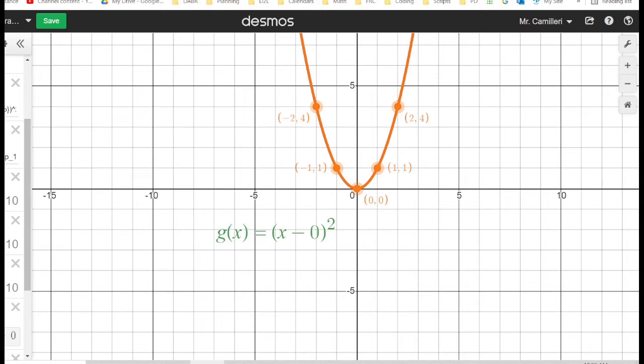Now let's take a look at what happens when we subtract a number from the x before we square it. We see that the points are moving to the right. The x values of the points are increasing. Why is this happening?